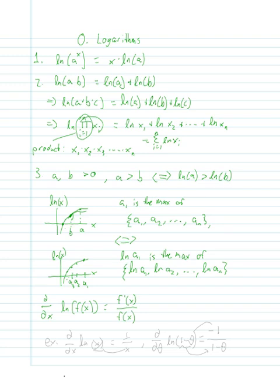For example, we have derivative with respect to x of ln of x is equal to 1 over x because the derivative of x is 1, and x goes back into the denominator.